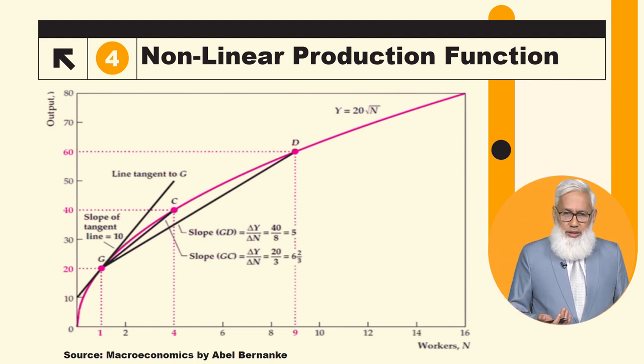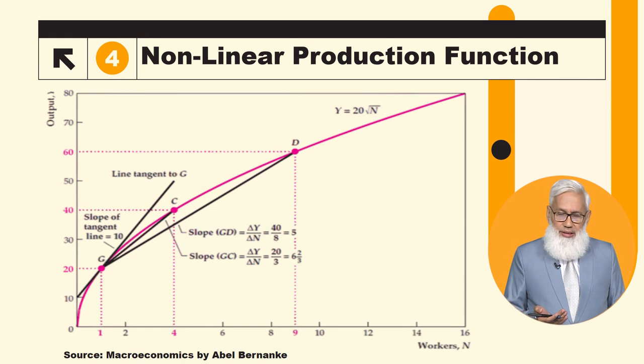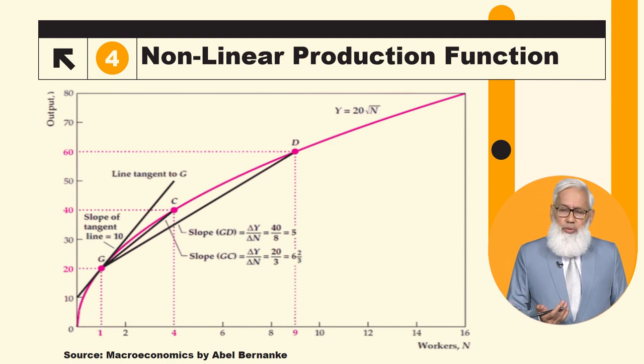Now we discuss long run or short run production function. Long run production function means that all factors of production are variable. A can change, K can be changed, and N can be changed. For example, when we discuss returns to scale, if you double the factors of production, how much will output change? This is the long run production function. Growth theories use the long run production function.